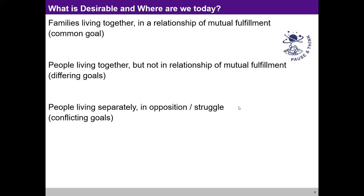Most of us can easily see that we want families living together in a relationship of mutual fulfillment. But evaluating the current state, there is very low possibility of people living together with a relationship of fulfillment. We can see this gap — we aspire for mutual fulfillment with everybody, but this is not the current state. We can also see that people are in opposition many times.